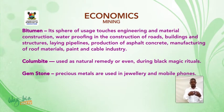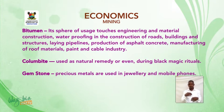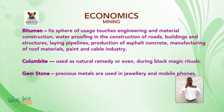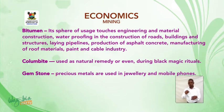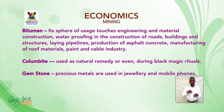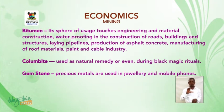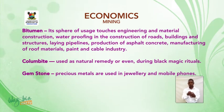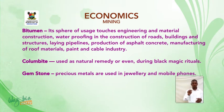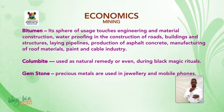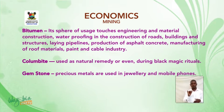Bitumen — its sphere of usage touches engineering and material construction: waterproofing in the construction of roads, buildings and structures, laying pipelines, production of asphalt concrete, manufacturing of roof materials, paint and cable industry. Columbite — columbite is used as a natural remedy or even during black magic rituals. Gemstone — precious metals are used in jewelry and mobile phones.